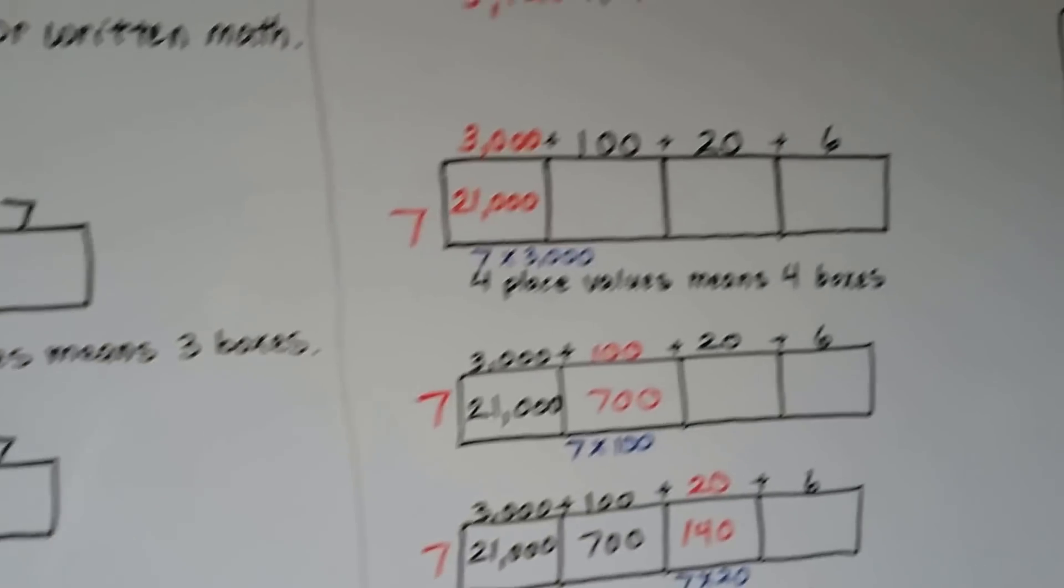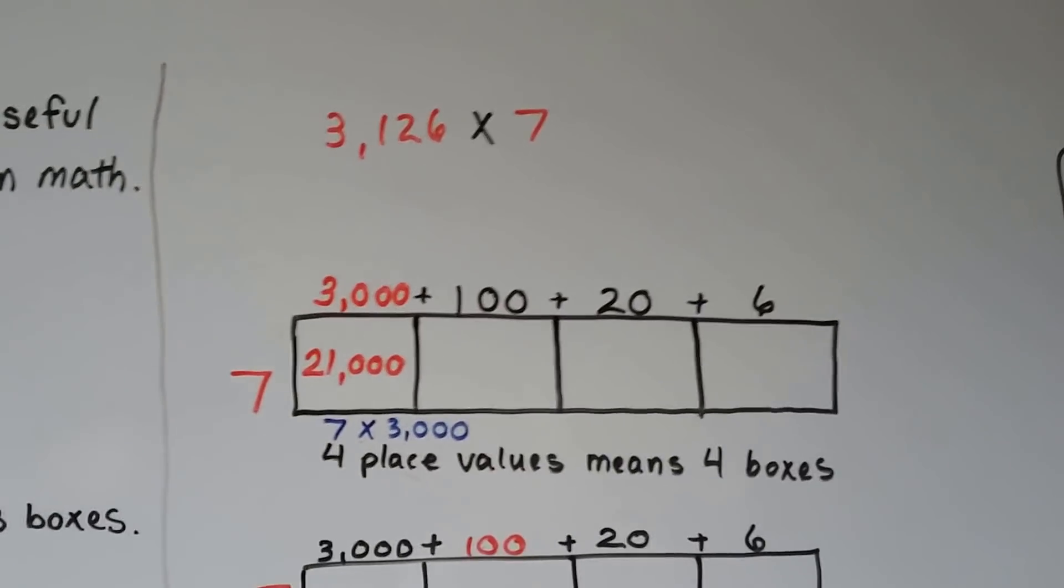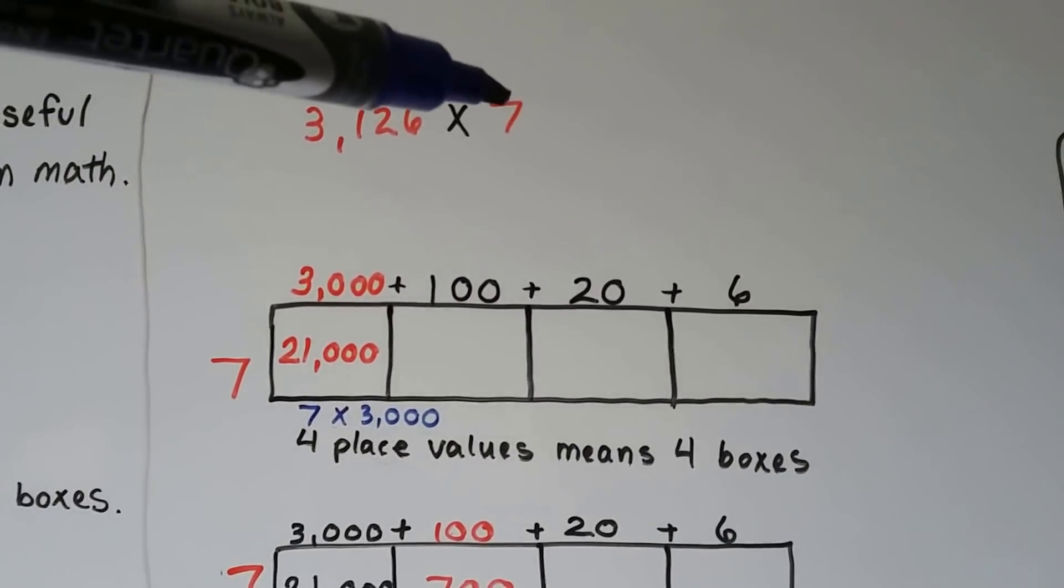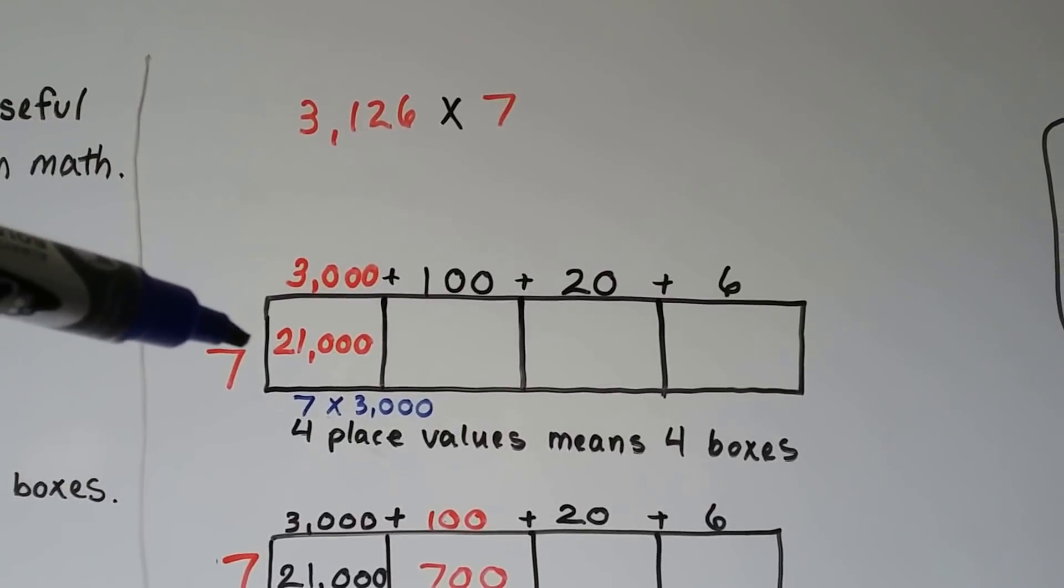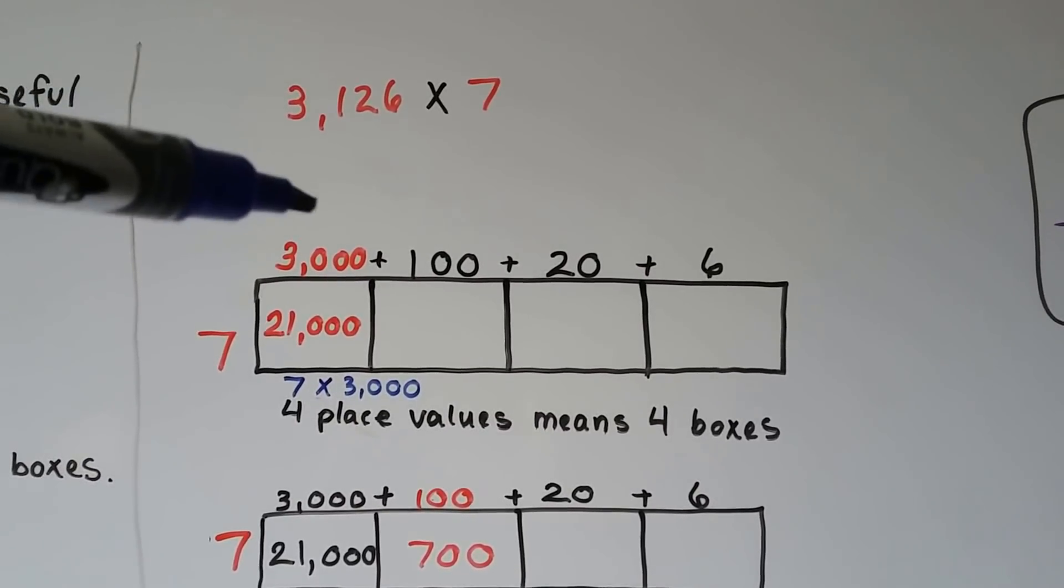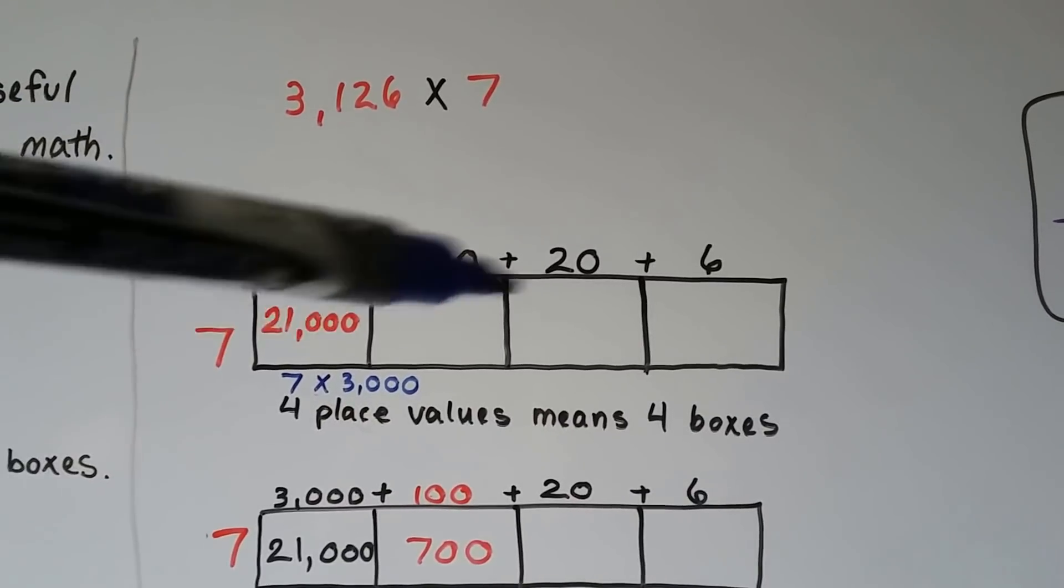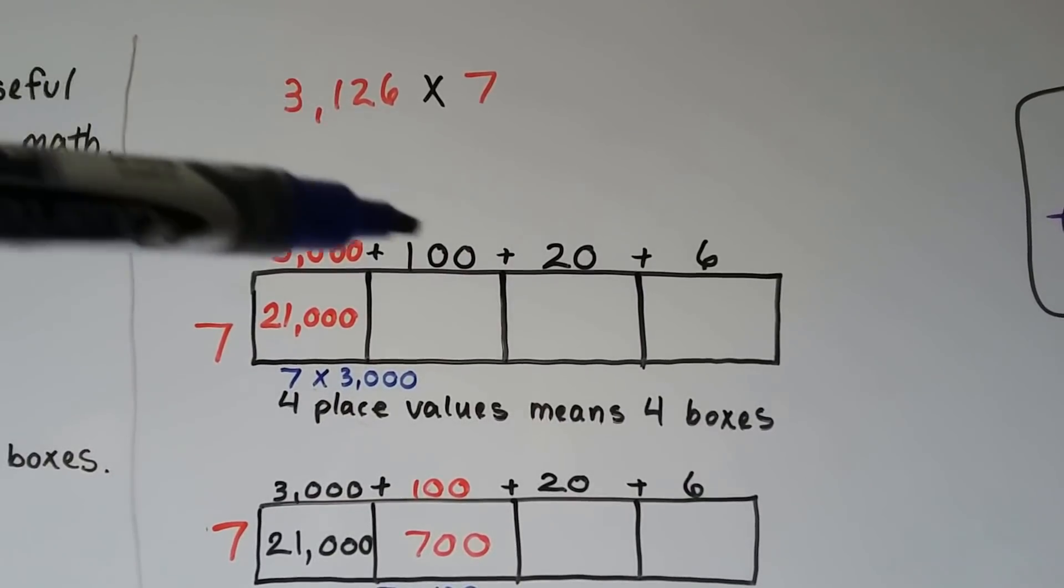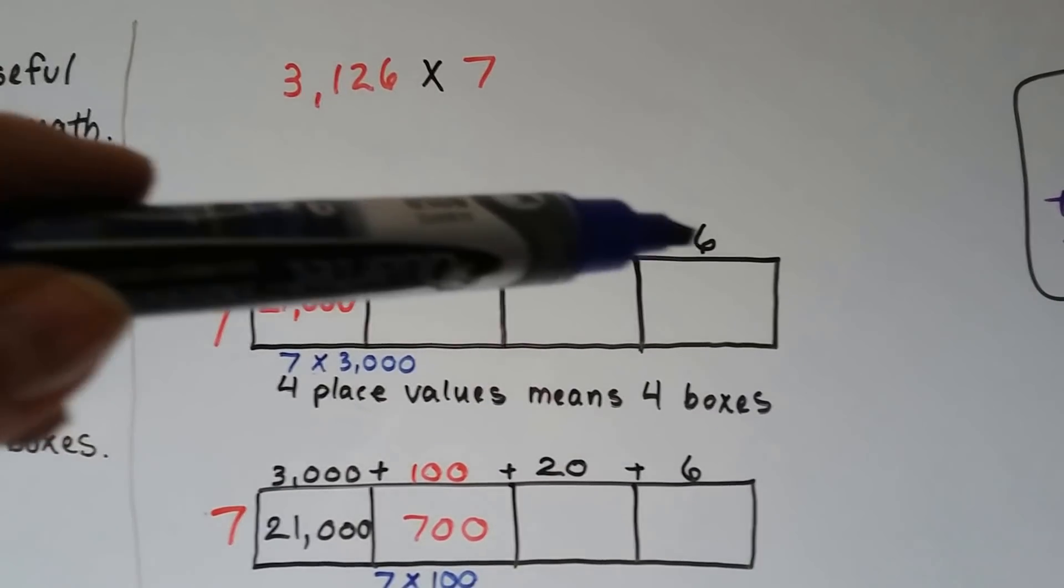Let's try it with a bigger number. Now we have a four-digit number, and we're going to put our multiplier here on the outside of the box. We're going to break this into four of its place values. We have four boxes: 3,000, 100, 20, and a 6.